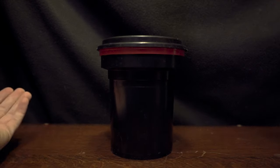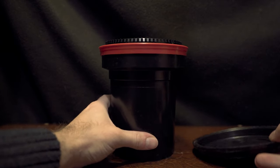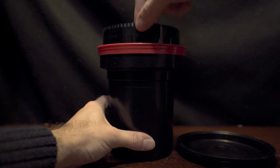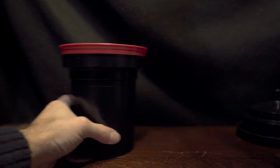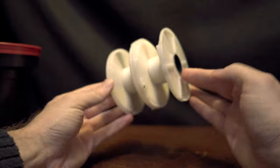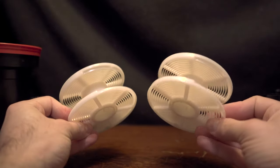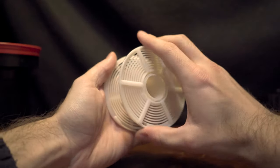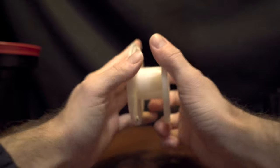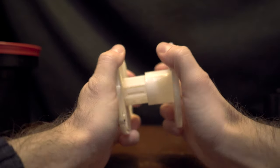Now let's talk about the Patterson tank. Underneath the lid is a screw off top and beneath that are the two spools that come with it. This tank can hold two rolls of 35 millimeter, or if you undo one of these and click it back into place you can develop one roll of 120 film.